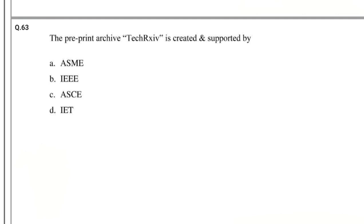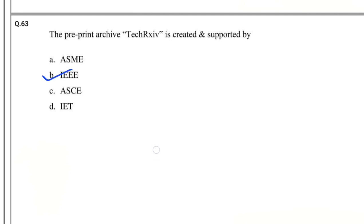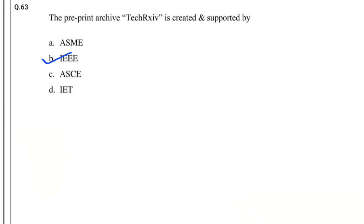Question number 63: The pre-print archive TechRxiv is created and supported by — options: ASME, IEEE, ASCE, IET. The answer is IEEE. ASME: American Society of Mechanical Engineers; IEEE: Institute of Electrical and Electronics Engineers; ASCE: American Society of Civil Engineers; IET: Institute of Engineering and Technology.